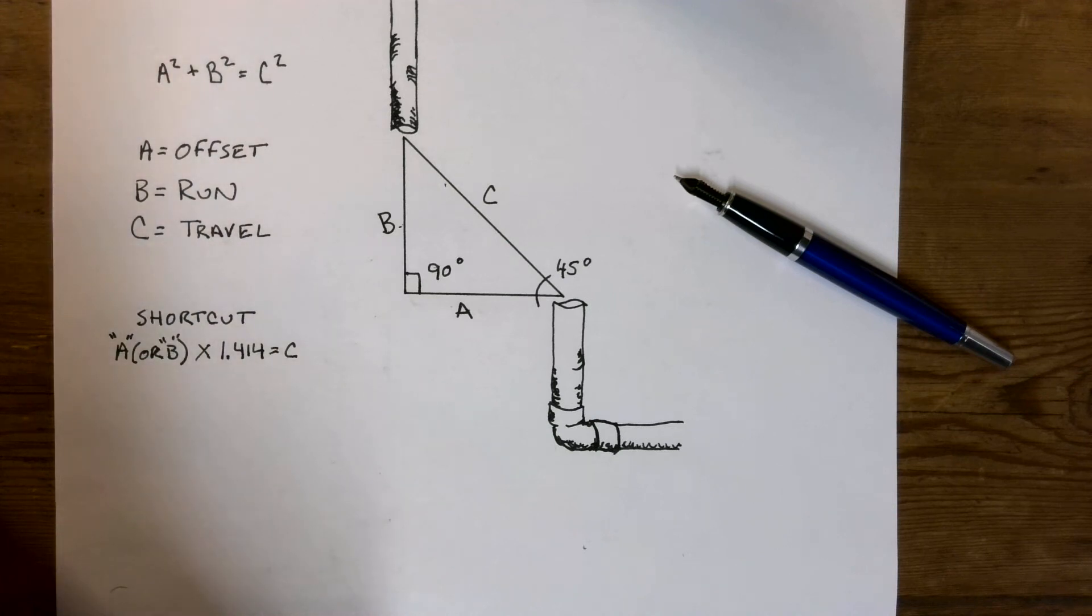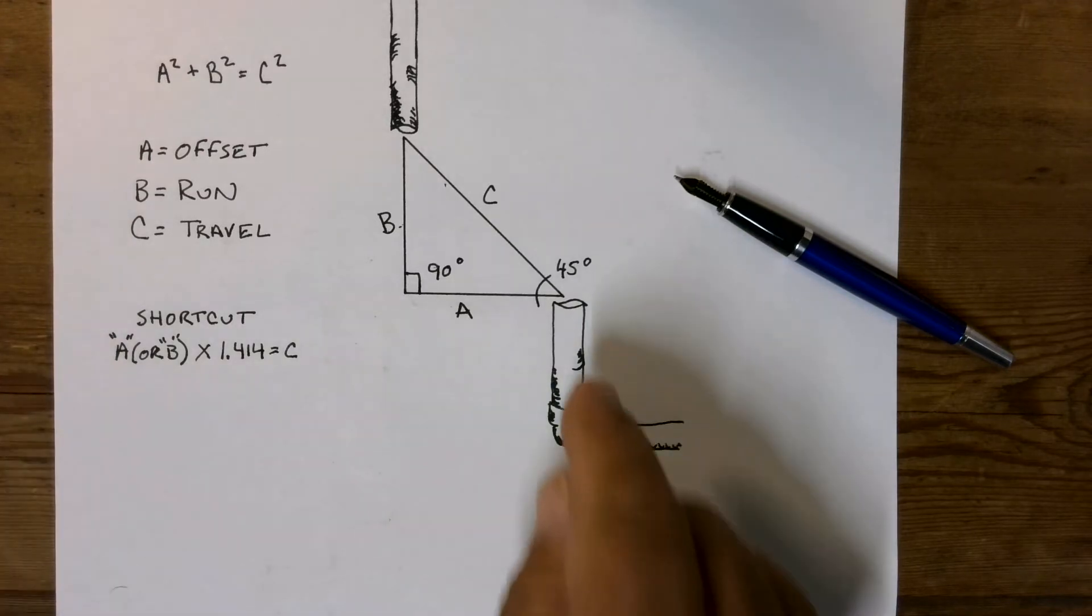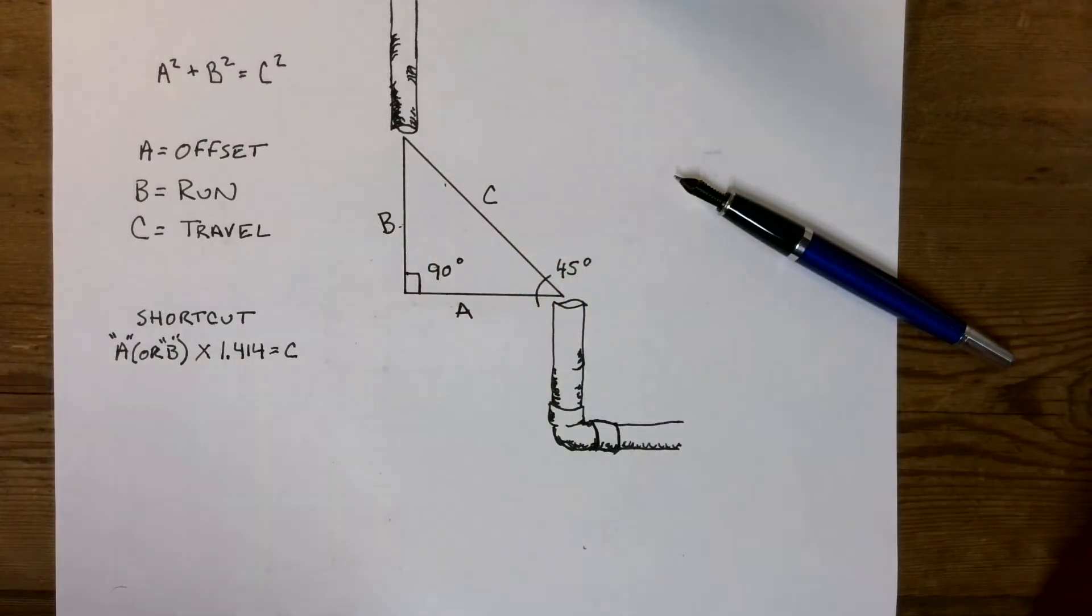Today I'm going to do a brief demonstration as to how a plumber comes up with a 45-degree length determination to tie a pipe together.